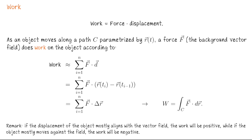As an object moves along the path C, which we've parametrized in the correct direction with some vector-valued function R, then a force F, represented by some background vector field, does work on the object according to the line integral of F dot dr over C.